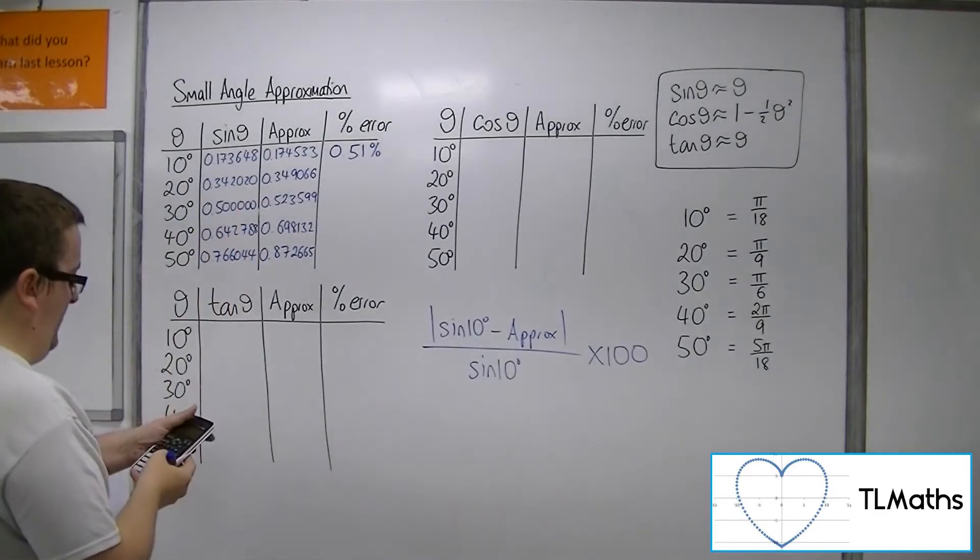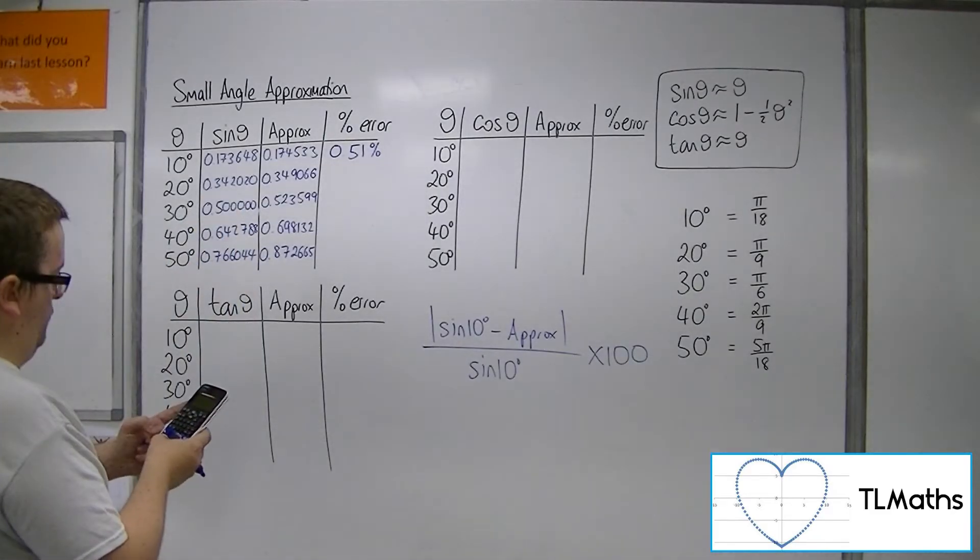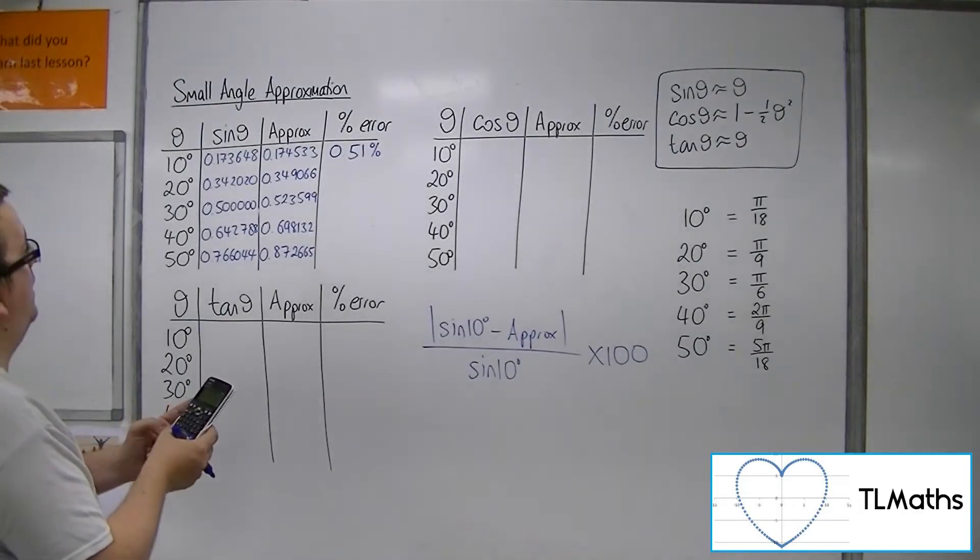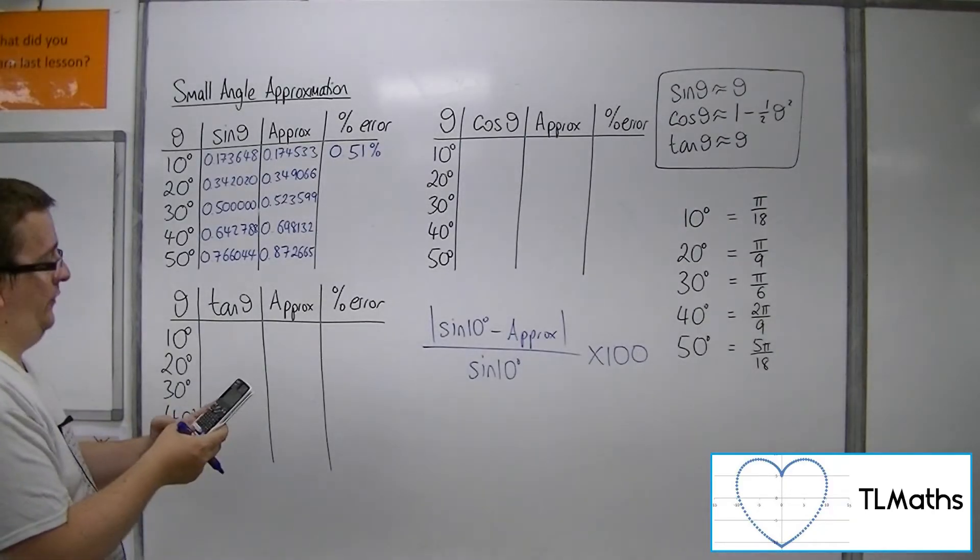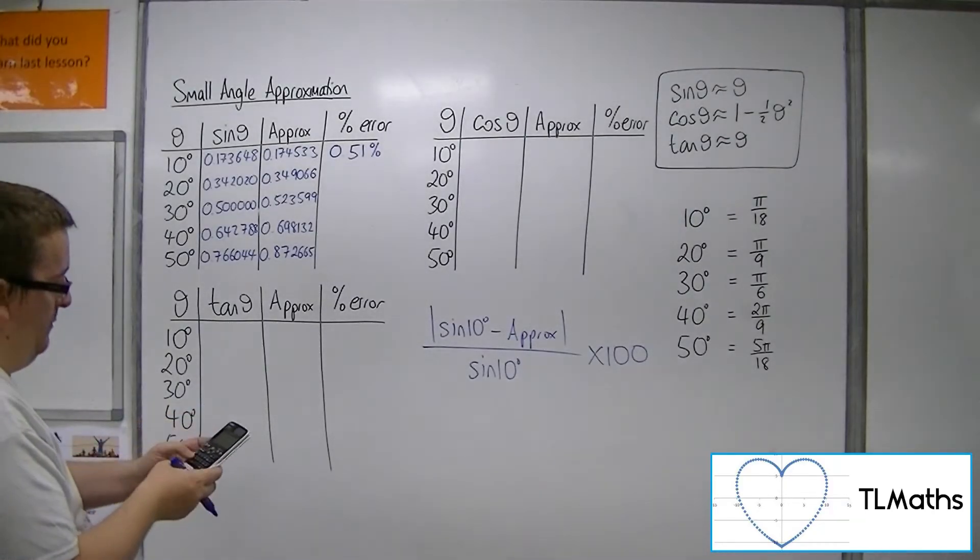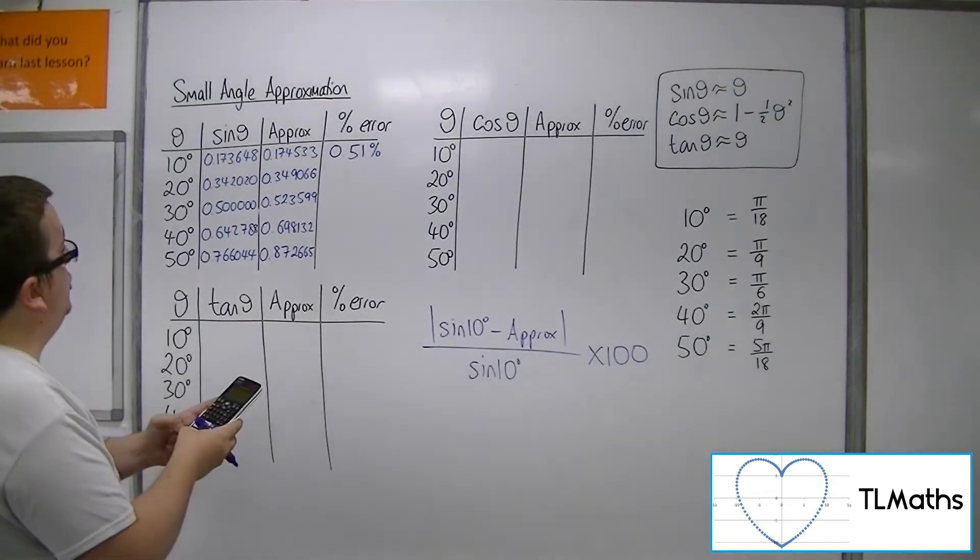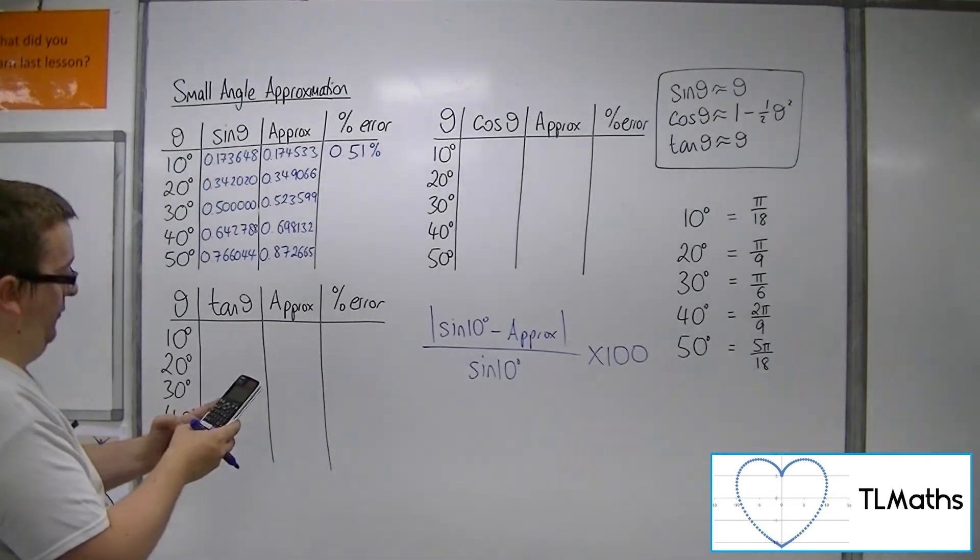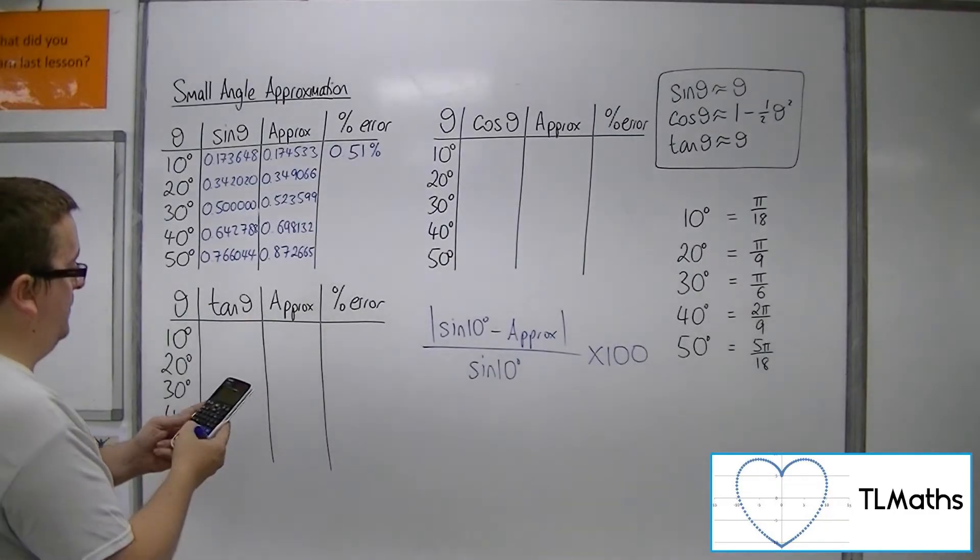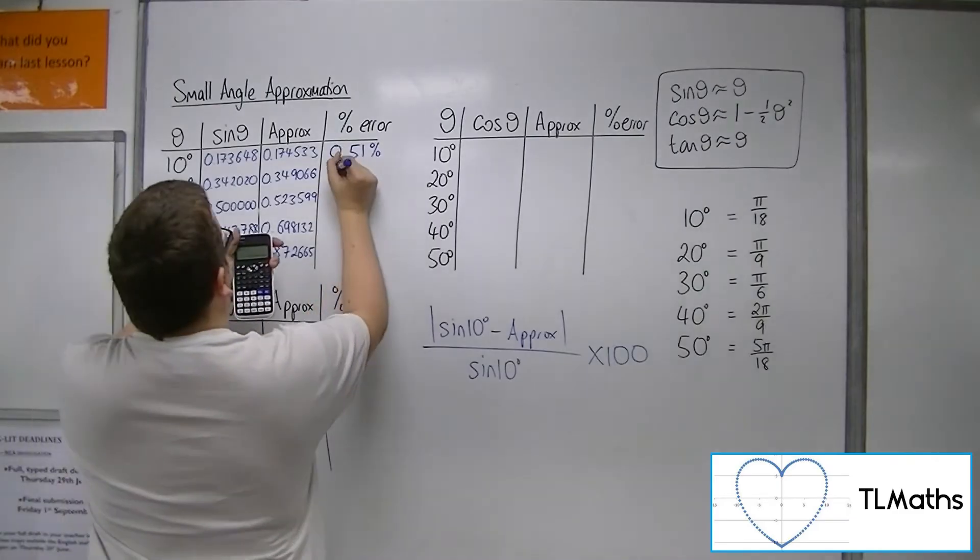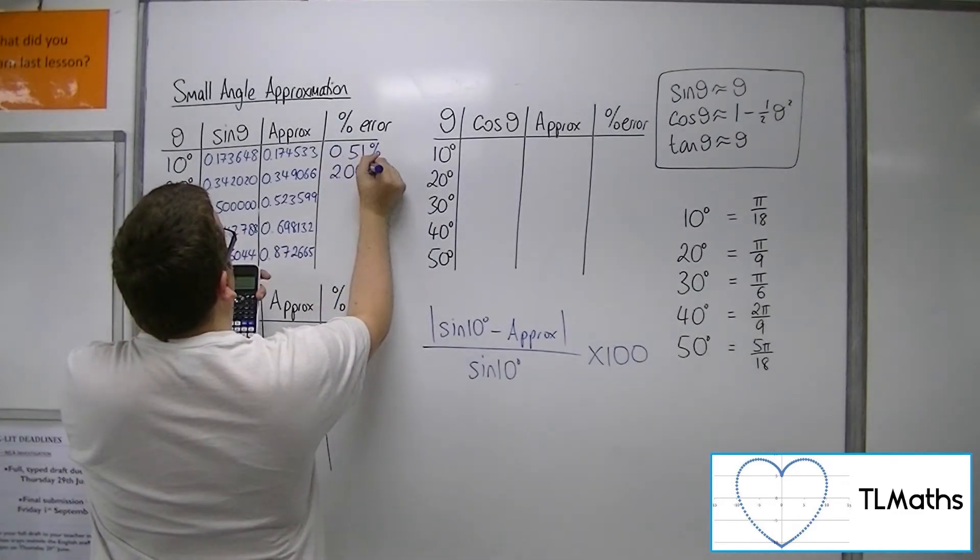When I've got 20 degrees, so 0.342020, take away 0.349066, times that by minus 1 to make it positive. Divide that by the original, so 0.342020, and then times that by 100, and that gets me 2.06%.